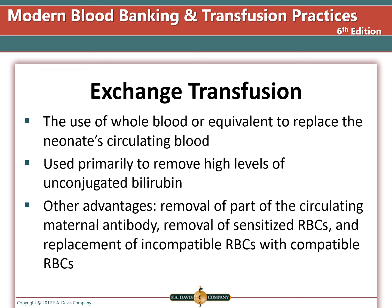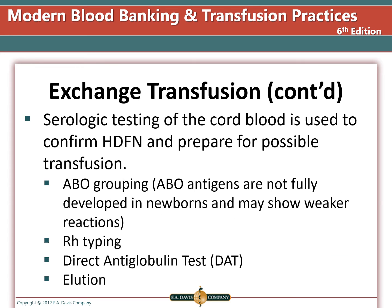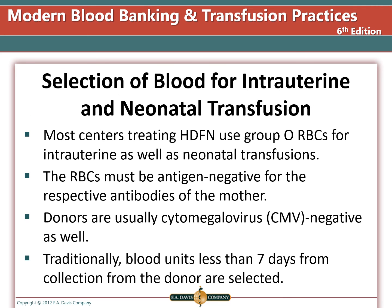Additional advantages of exchange transfusion include removing circulating maternal antibody, removing sensitized red blood cells, and replacing incompatible cells with compatible ones. The donor unit must be negative for the antigen the mother has made an antibody to. Cord blood samples are used to confirm HDFN: ABO grouping, Rh type, DAT, and elution testing are performed — the elution removes antibody to allow identification, and should match the antibody ID from the maternal sample. Most centers use group O red blood cells for intrauterine and neonatal transfusions. Donor units must be antigen-negative, CMV-negative, less than seven days old, and usually negative for sickle cell disease or trait.